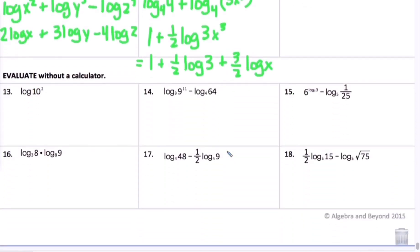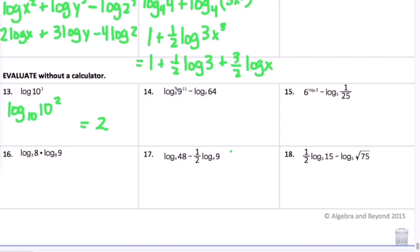Numbers 13–15 are evaluated without a calculator. Number 13: log of 10 squared — since there's no base it's base 10, so log base 10 of 10 squared. Using the exponential-logarithmic inverse, the answer is the exponent: 2. Number 14: 11 minus log base 4 of 64. Since 4 to the third power equals 64, that log equals 3, and 11 minus 3 equals 8.